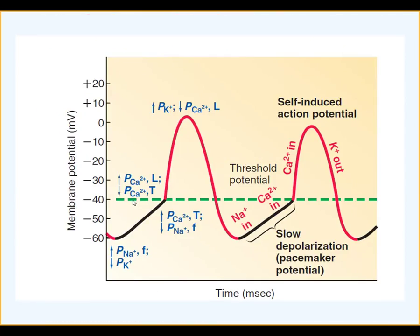What makes pacemaker cells fire impulses on their own? This involves the most challenging graph we will describe today. Let's go back to the regular action potential we learned in skeletal muscles and neurons. We had a resting membrane potential — sometimes minus 90 as in muscles, sometimes minus 70 — and because of some stimulus, the voltage-gated sodium channels opened, causing depolarization in the nerve or muscle.